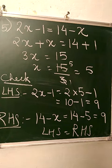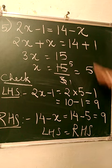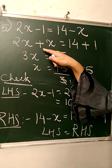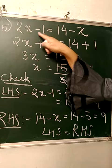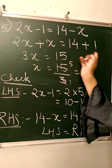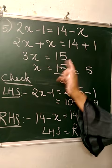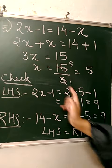This is the last question: 2x - 1 = 14 - x. We bring all variables to one side and constants to the other. The -x changes sign to plus, and -1 also changes to plus. This gives 3x = 15, so x = 5. We then substitute the value of x in LHS and RHS.